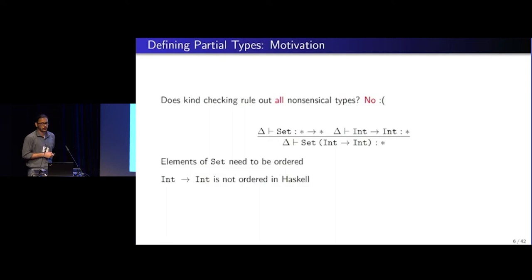But when you apply set to the int function, it has a well-defined kind. But it still does not make sense, right? Because the int function needs to be, or all functions need to be ordered. But I don't think it makes sense for functions that take an int and return an int to be ordered. At least in Haskell, it does not.